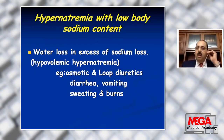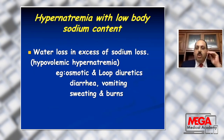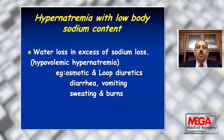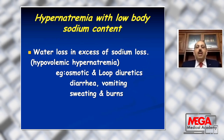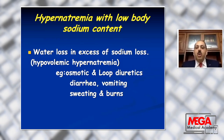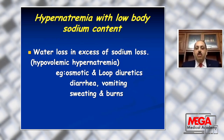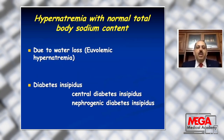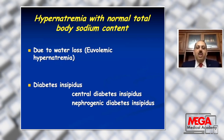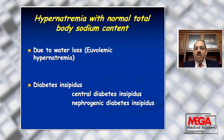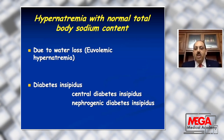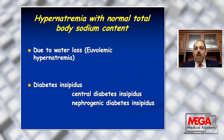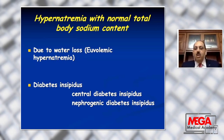Hypovolemic hypernatremia is where there is water loss in excess of sodium loss, caused by osmotic and loop diuretics, diarrhea, vomiting, sweating, and burns. Euvolemic hypernatremia occurs in diabetes insipidus, whether central or nephrogenic, where there is loss of large volumes of urine that may reach 16 to 20 liters per day.